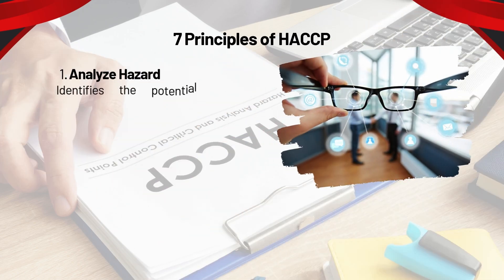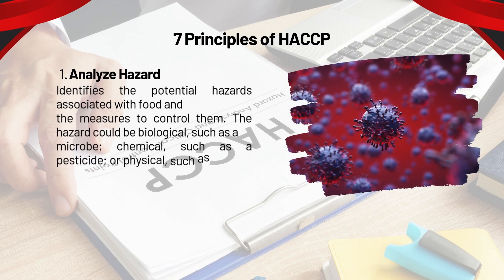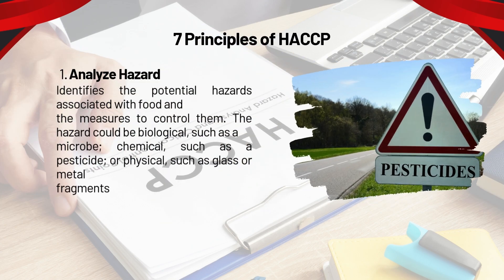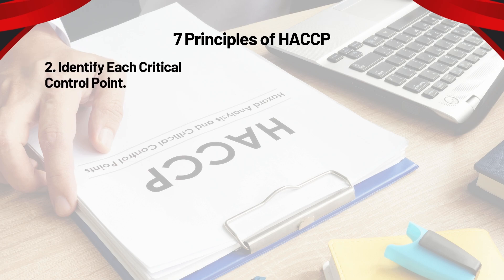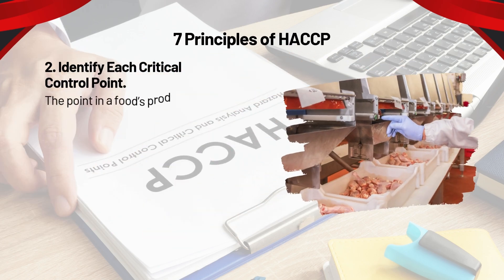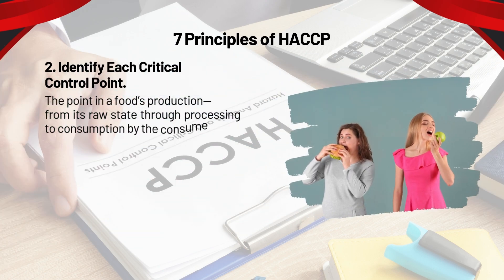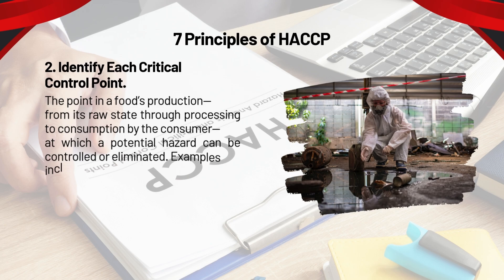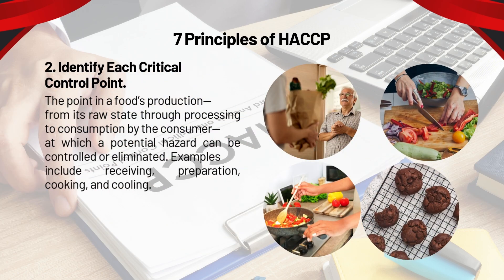There are 7 sequential steps to developing a full HACCP plan. Principle 1: Analyze hazards — identify the potential hazards associated with food and the measures to control them. The hazard could be biological, such as a microbe; chemical, such as a pesticide; or physical, such as glass or metal fragments. Principle 2: Identify each critical control point — the point in a food's production, from its raw state through processing to consumption, at which a potential hazard can be controlled or eliminated. Examples include receiving, preparation, cooking, and cooling.